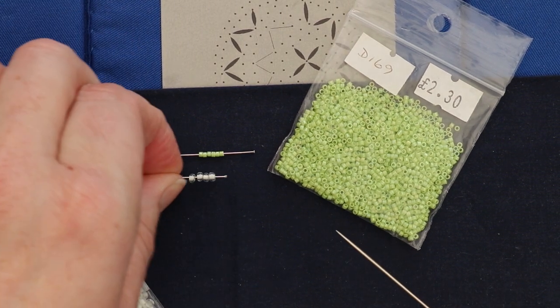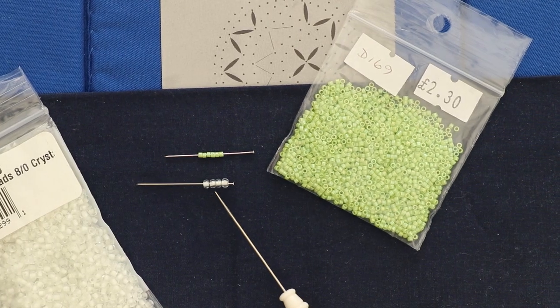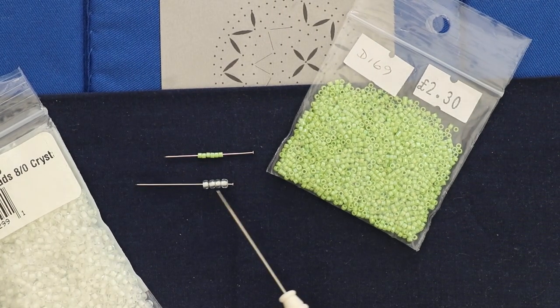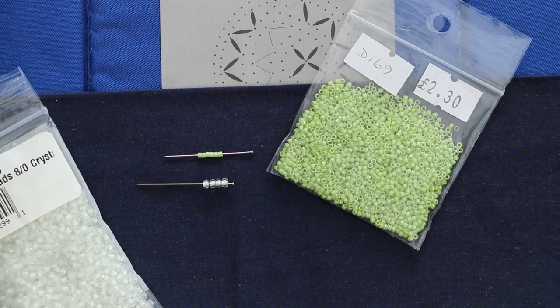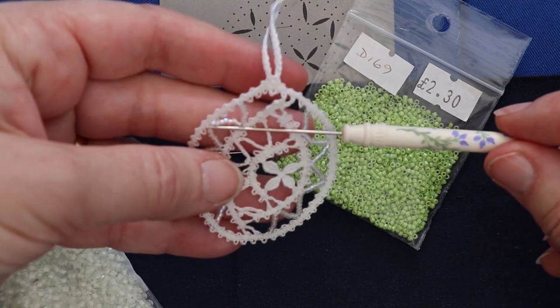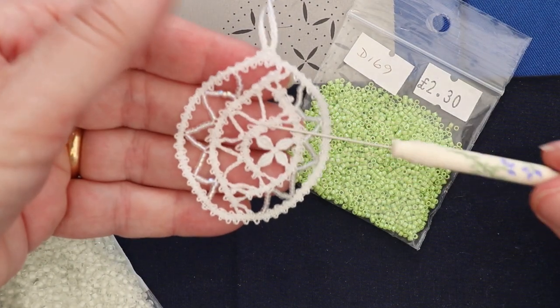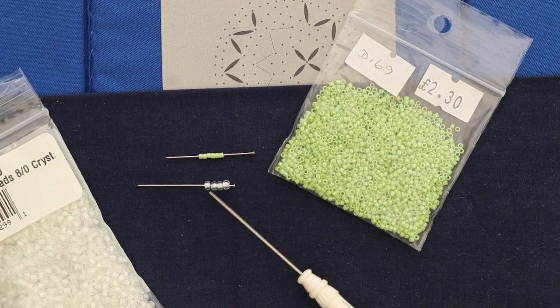Now these are seed beads size eight, and you would obviously use a lot less beads than you would for the Delicas. I use the Delicas on the sample piece because it gives a nice square cylinder of beads to go across it, but as I say you will get a different look.